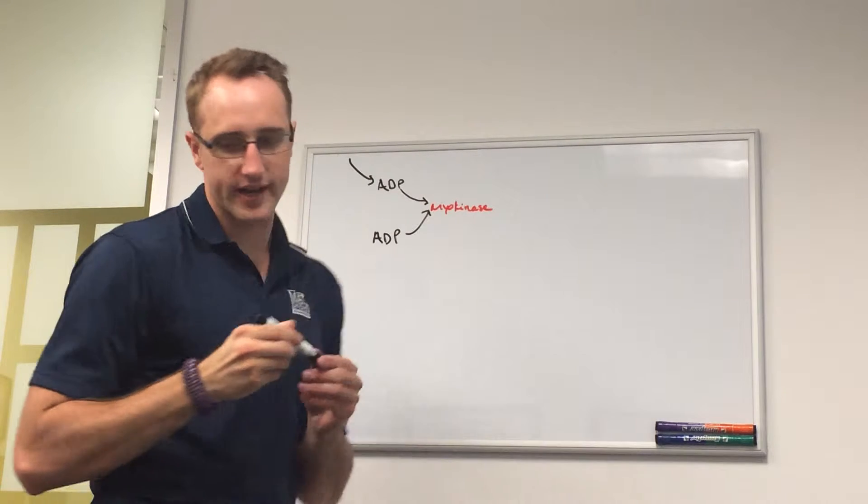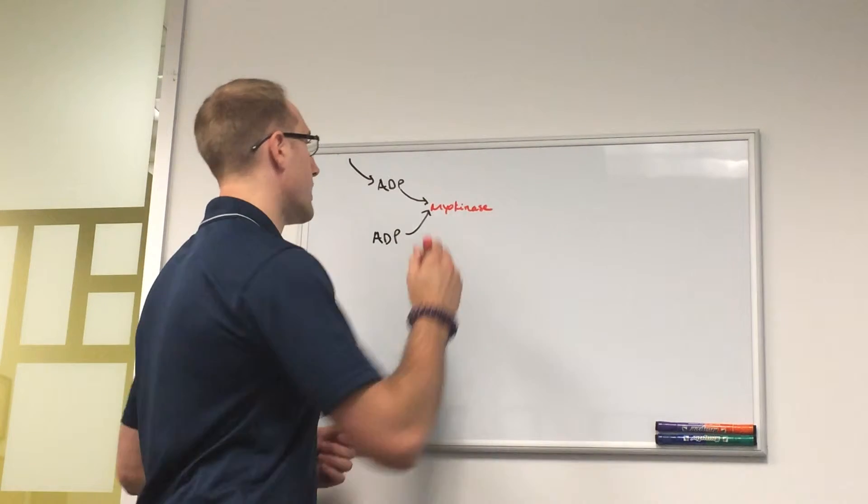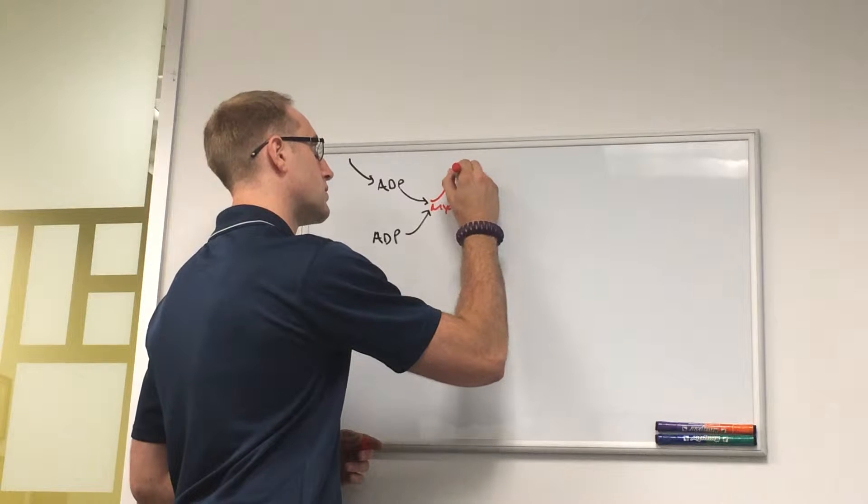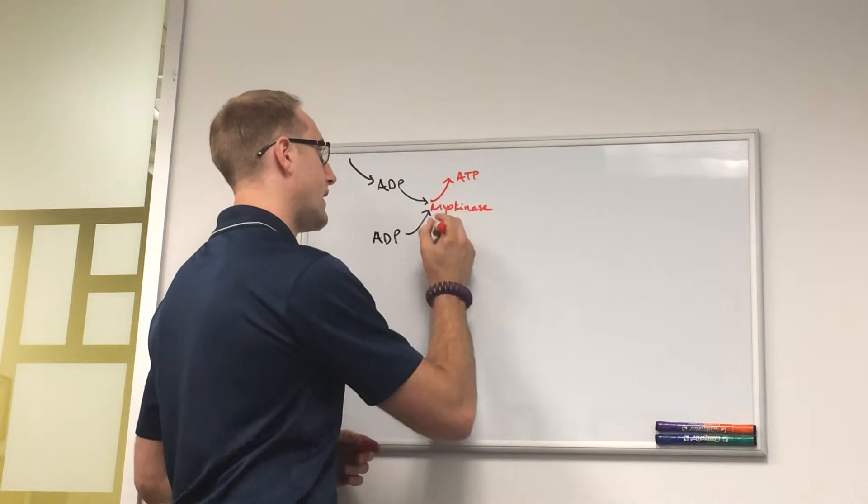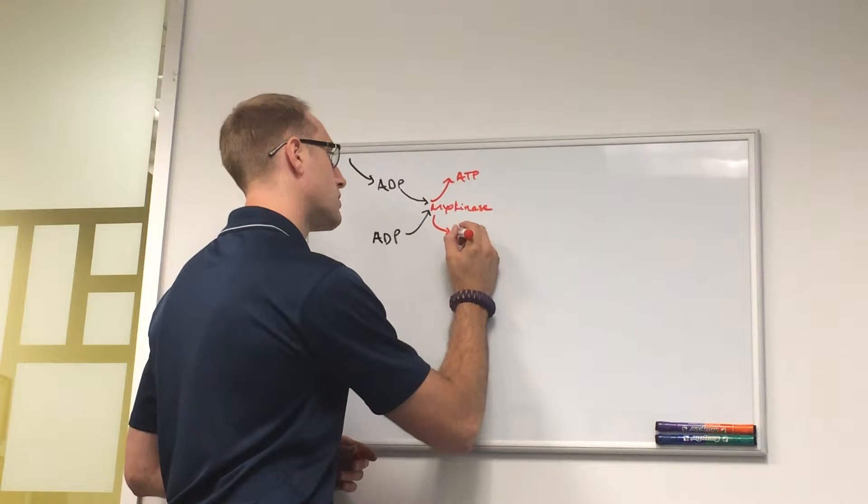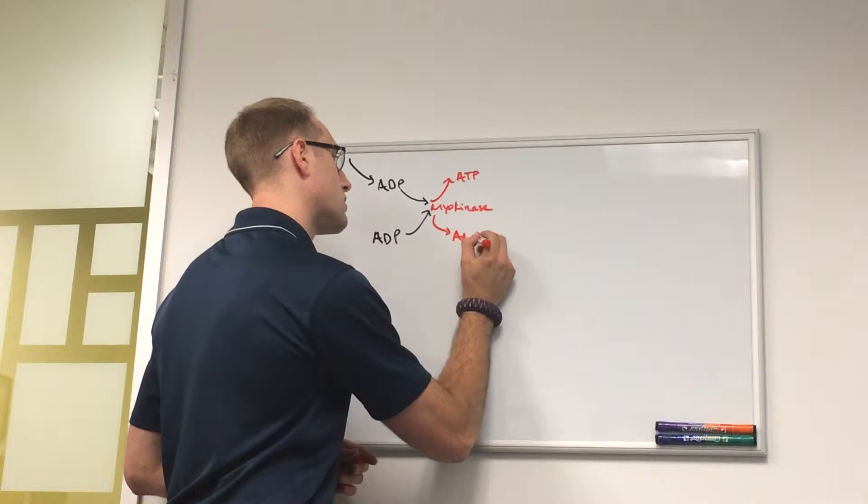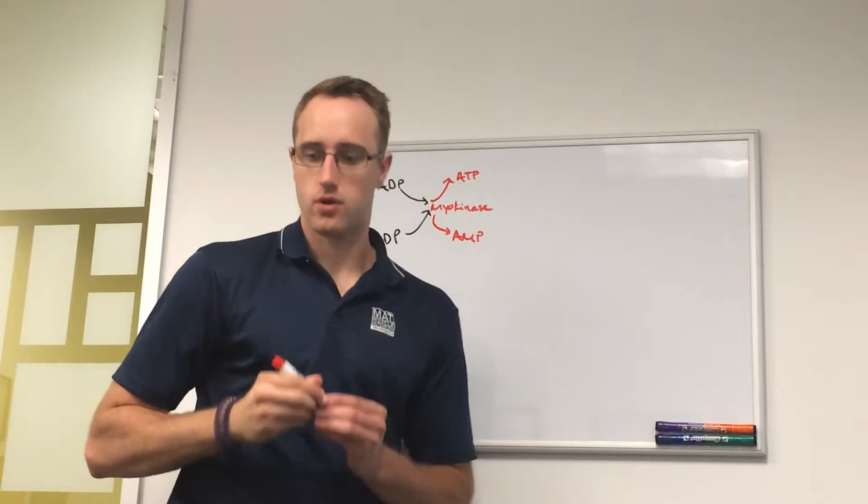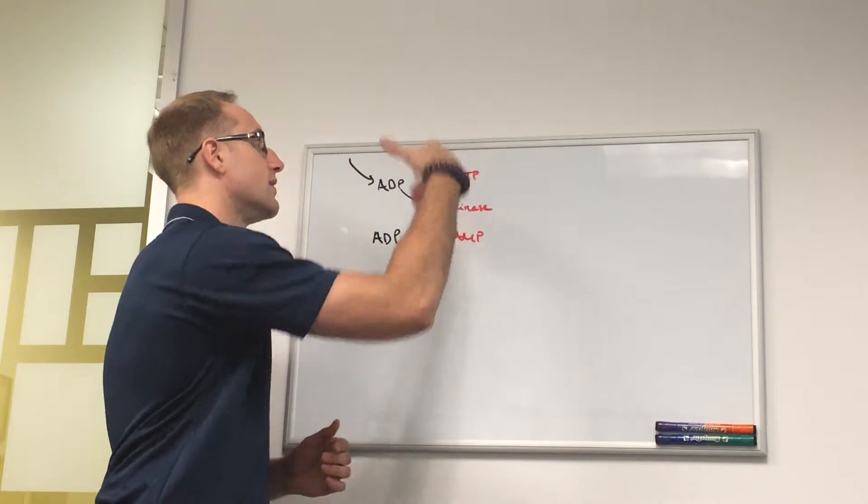And from there it produces one ATP and one AMP. So the ATP then gets used back in the muscle contraction process, as we described in the last video. The AMP goes through a bunch of steps.